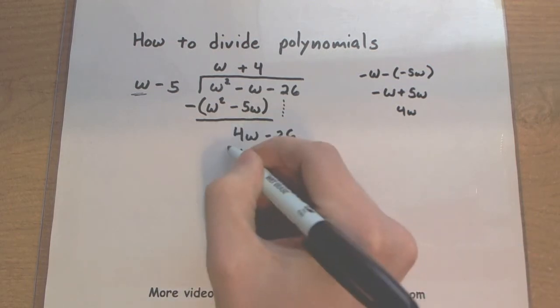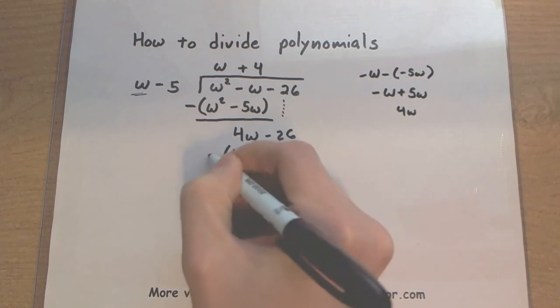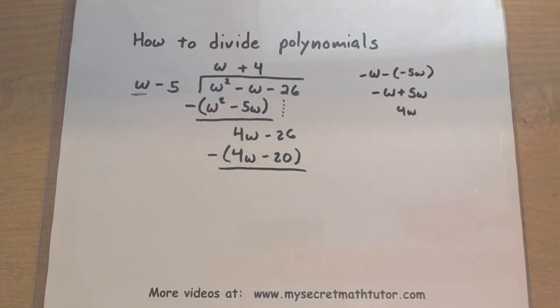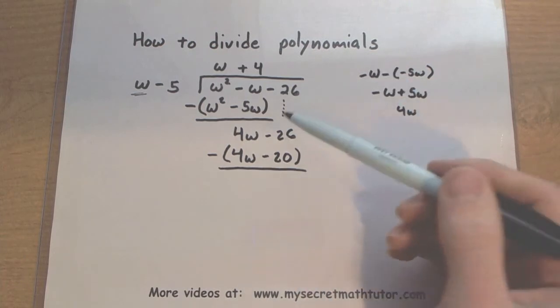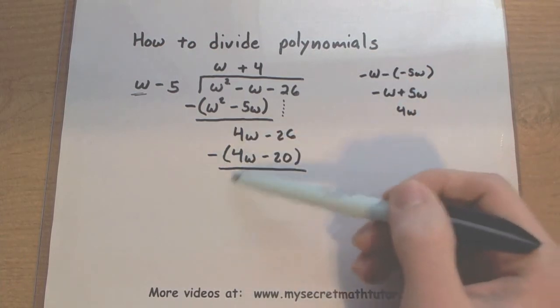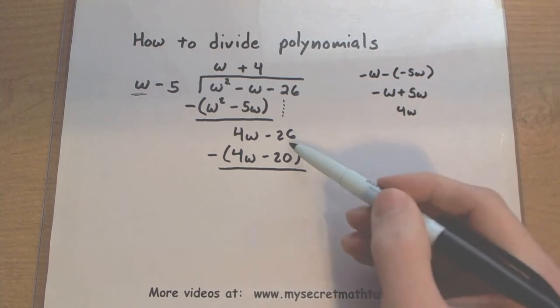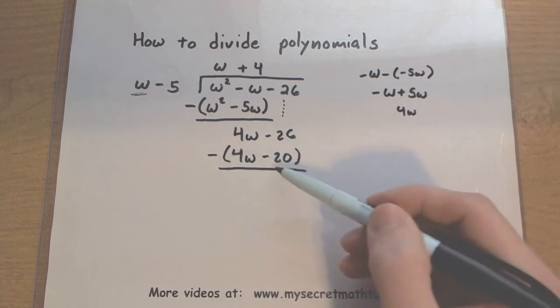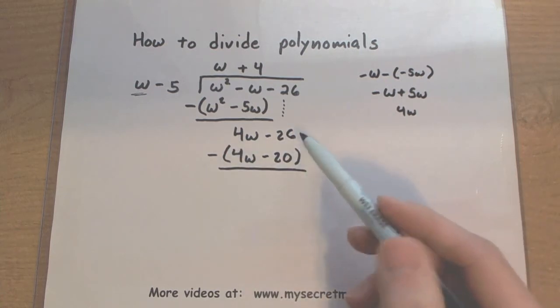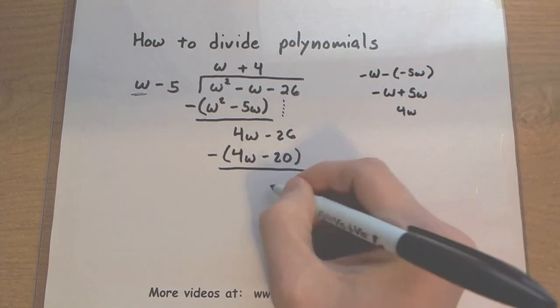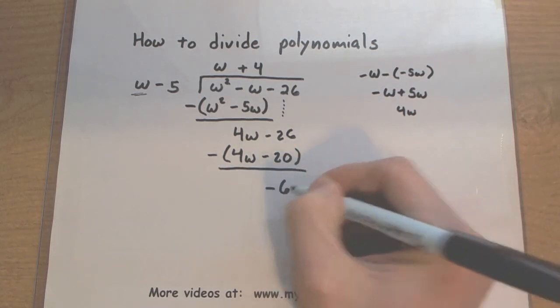And of course, we want to remember that we are going to subtract away that entire thing. So I put my big old parentheses on there, giant negative sign out front, and we subtract away. So 4w minus 4w, gone. Negative 26 minus a minus 20. Remember, that's like saying negative 26 plus 20. So this will give us just a minus 6.